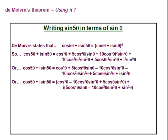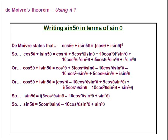Next, we factorize into our real parts and our imaginary parts — three real terms and three imaginary terms. We are interested in the imaginary terms because we are looking for sin(5θ), and in our original statement we have i·sin(5θ). Looking at the three imaginary terms, we can get rid of the i's on both sides to obtain a statement for sin(5θ).